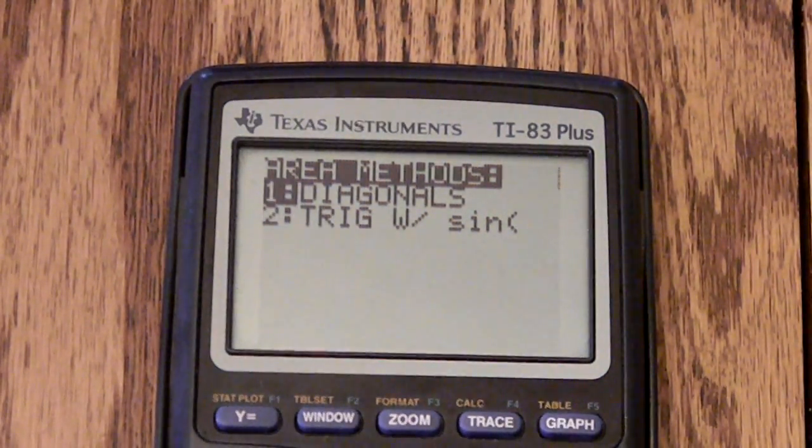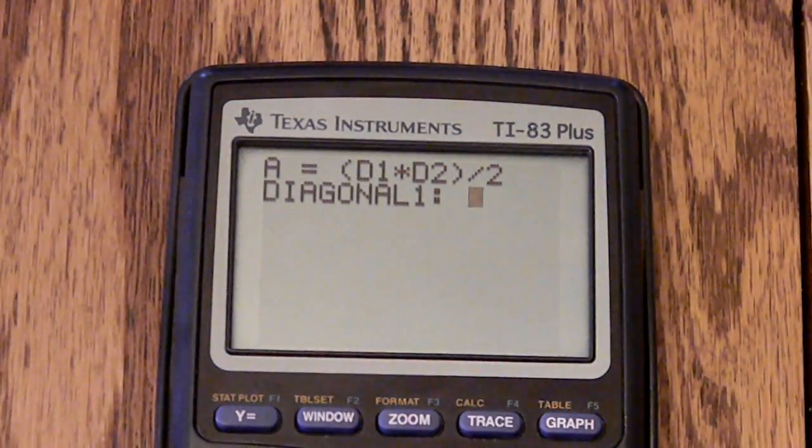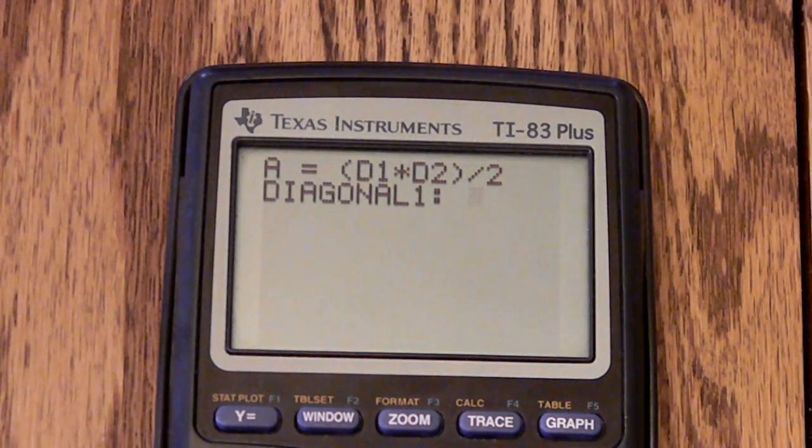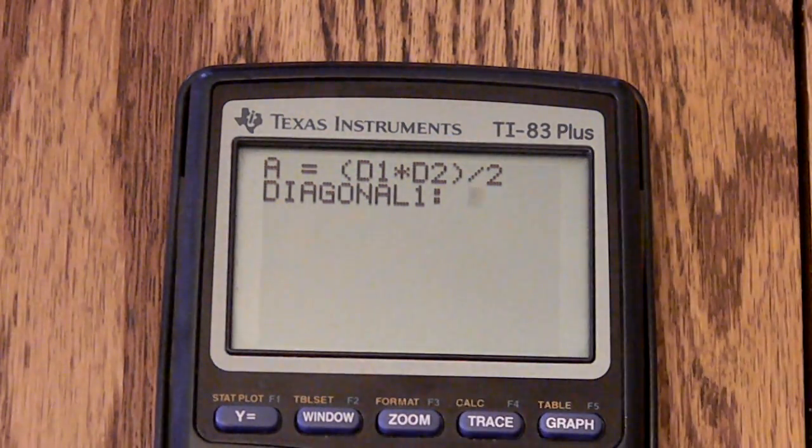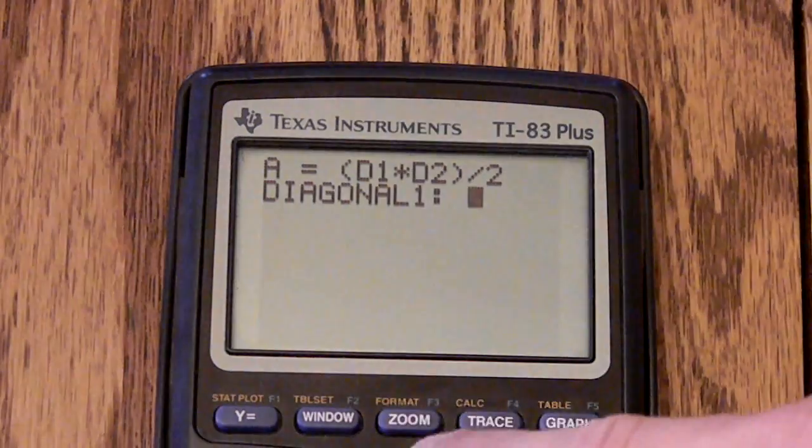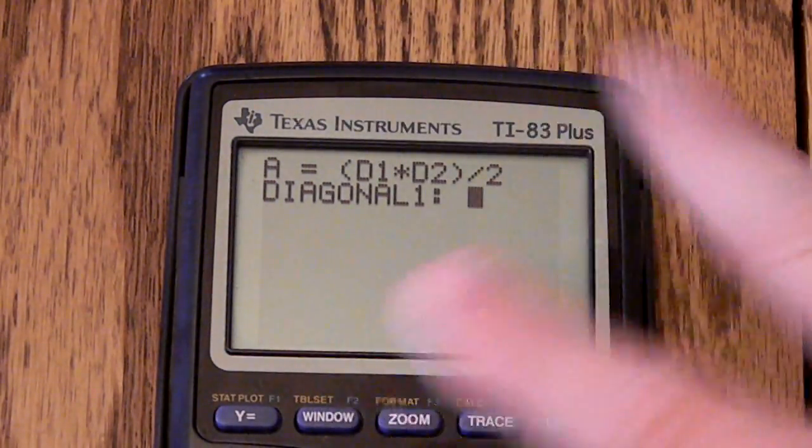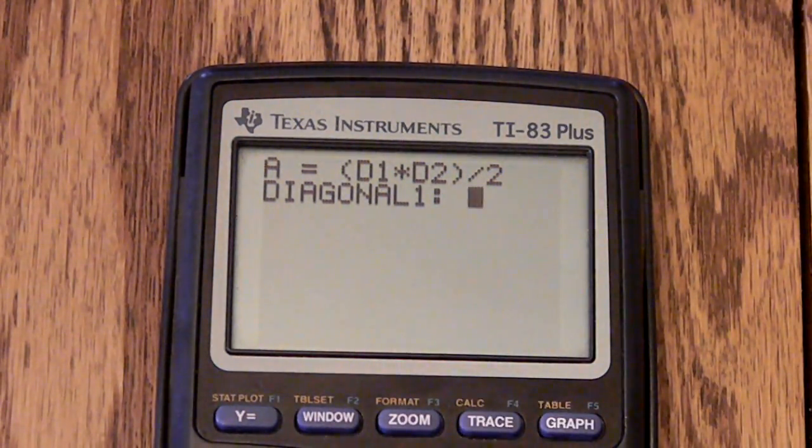The area of a kite using my diagonals method is diagonal one, the length of that times diagonal two, and then all that divided by two. So you can type in like nine, that's diagonal one.